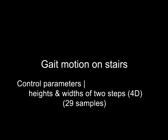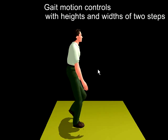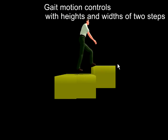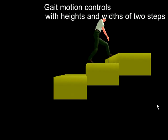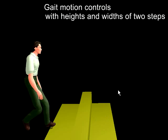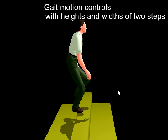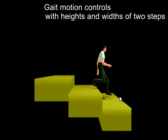This demonstration synthesizes gaits on stairs. The motion is parameterized by the heights and widths of two steps. We can edit various types of walking up and down, for example, by interactively changing the shape of each step. Notice that this interactive editing can also be done in real time.